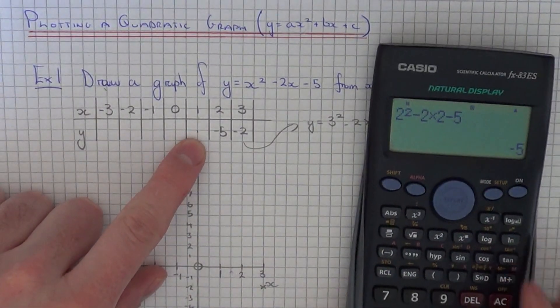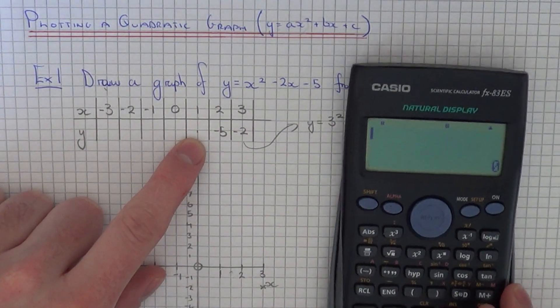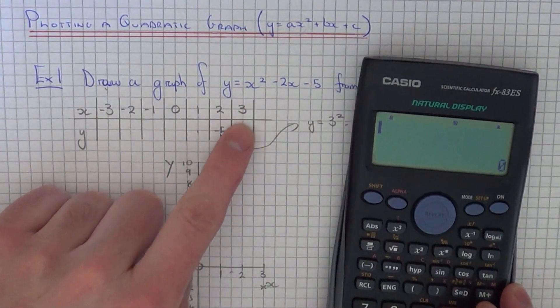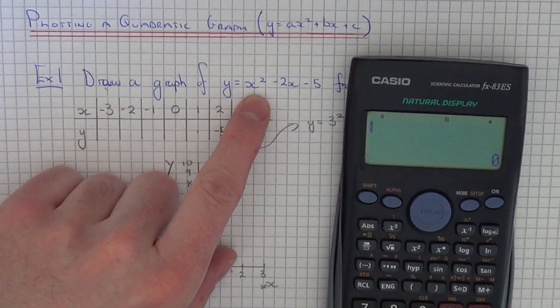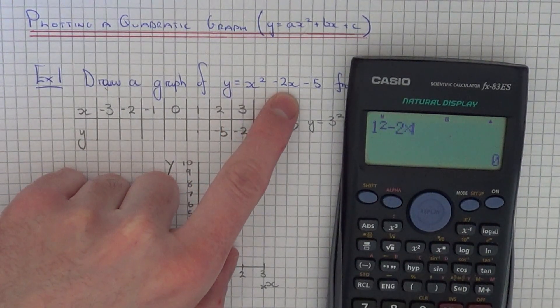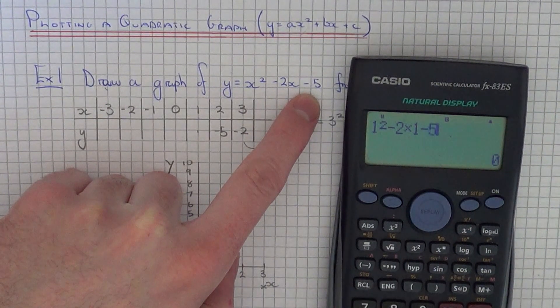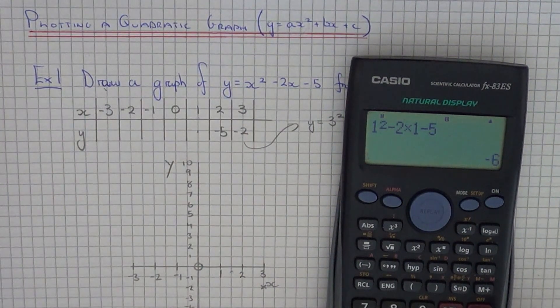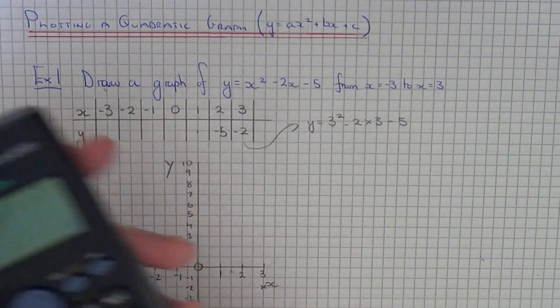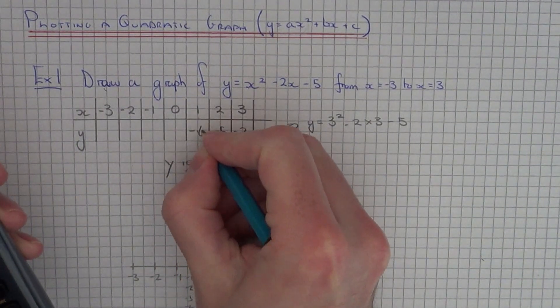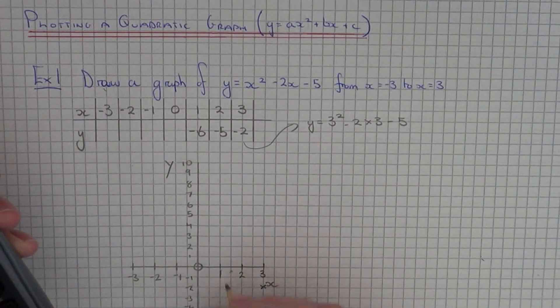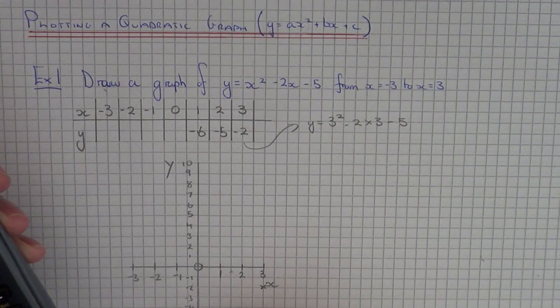So our next x coordinate is x equals 1. So again if we substitute it into our equation it will be 1 squared minus 2 times 1 take away 5. So our next x coordinate is minus 6. So if we plot 1 comma minus 6 which is there.